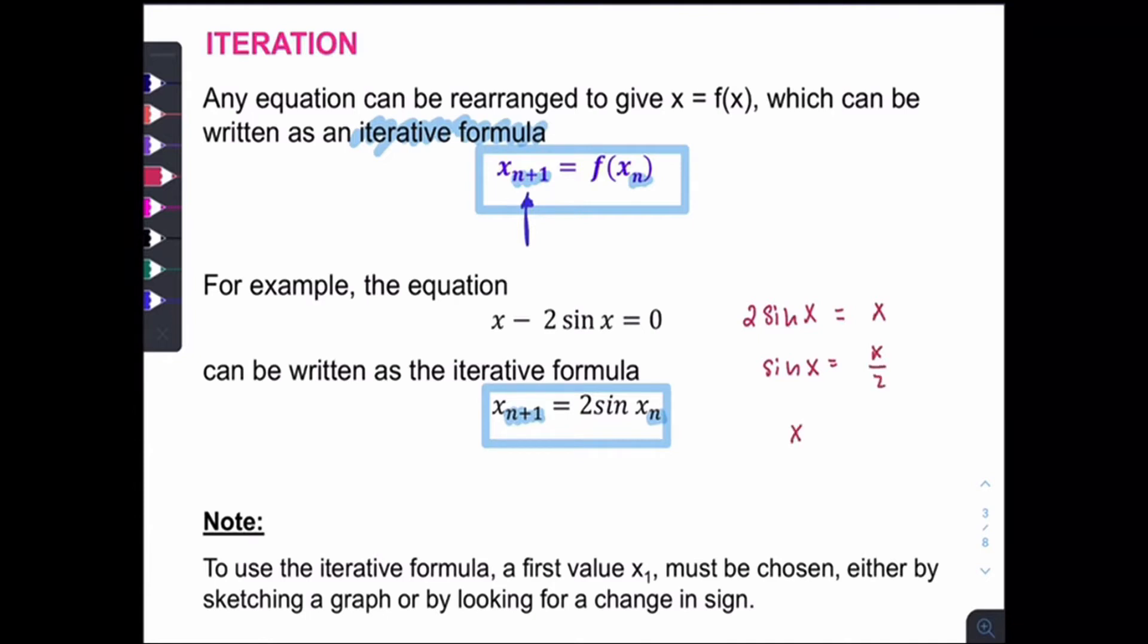And the x here will be equal to inverse sine x over 2. So for the x at the left hand side, we should label with n plus 1. As for the x at the right hand side, it should be labeled with n. So this gives you another iterative formula.